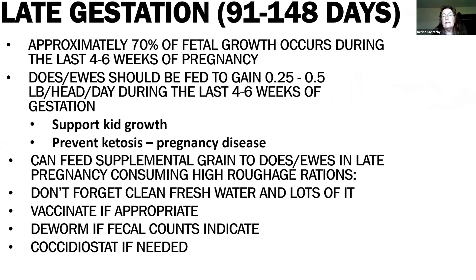In late gestation, 70% of fetal growth is occurring. By knowing this, it should make sense that their plane of nutrition needs to increase as well. Depending on what you're feeding your animals, you may need to start supplementing with a little concentrate to increase their plane of nutrition to support growth of the lambs and kids and also prevent pregnancy toxemia or ketosis, which we'll talk about a little later. Always make sure there's plenty of clean, fresh water.